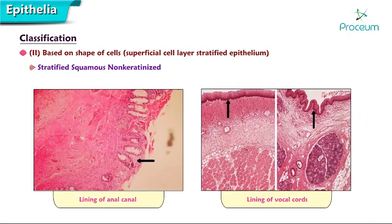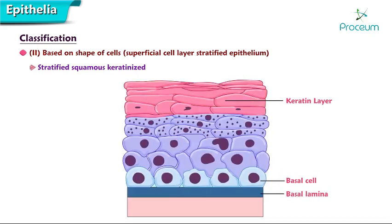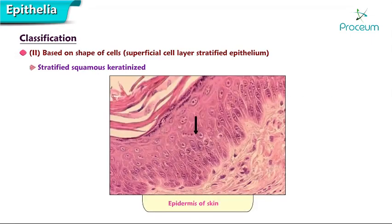Stratified squamous keratinized: the superficial cell layer is a flattened keratin layer with cells that are without nuclei, arranged in many layers of dead, flat, scaly cells in the superficial zone or stratum corneum. The most superficial cells die and lose their nuclei; these cells contain a substance called keratin, which forms a non-living covering over the epithelium. Occurrence is in the epidermis of skin. Function is protection.